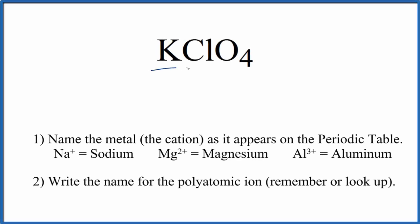To write the name for KClO4, we first need to recognize that K, that's potassium, this is a metal, and ClO4, this is a polyatomic ion, it's a group of nonmetals, it's called the perchlorate ion.